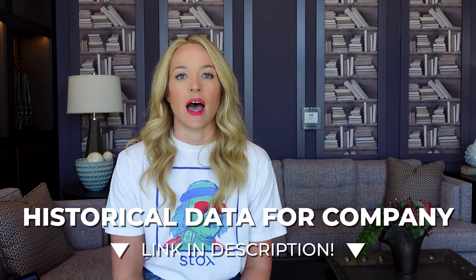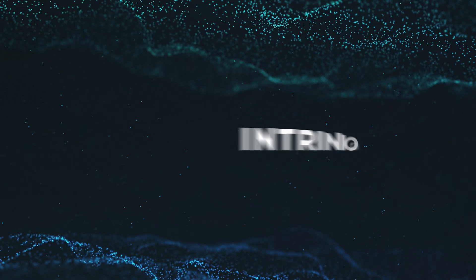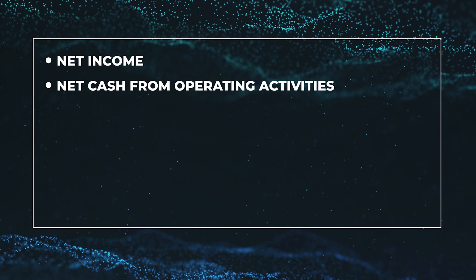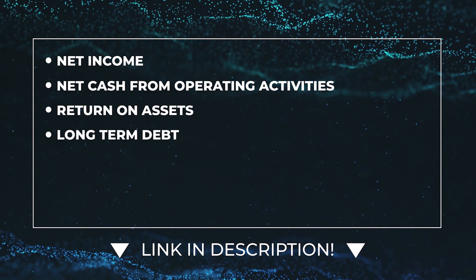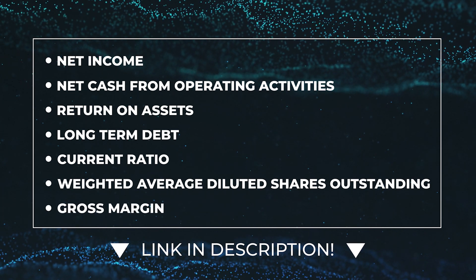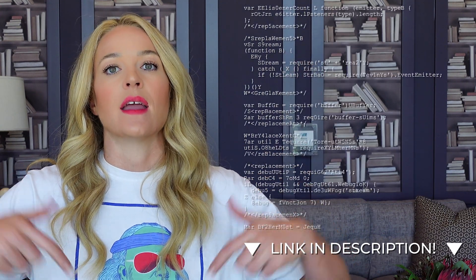We will be utilizing the Intrinio Historical Data for Company API endpoint. We will be using the following data tags with this endpoint: net income, net cash from operating activities, return on assets, long-term debt, current ratio, weighted average diluted shares outstanding, and gross margin. I will walk you through a simple three-step process for retrieving this information using the Intrinio API. I'll be showing you the code snippets, but you can view the full code example by clicking on the GitHub link in the video description.